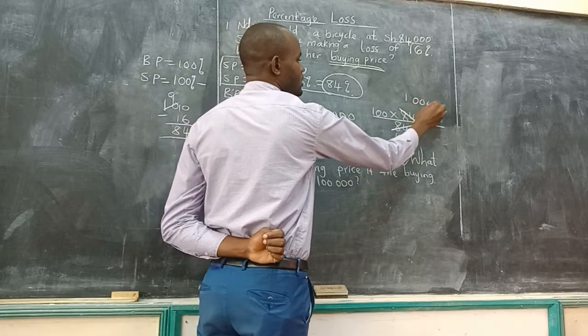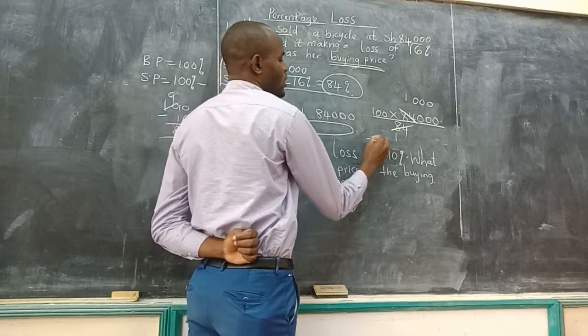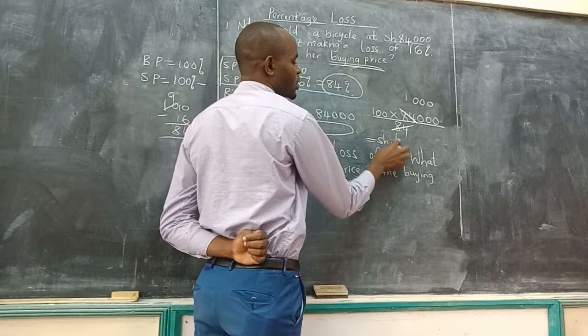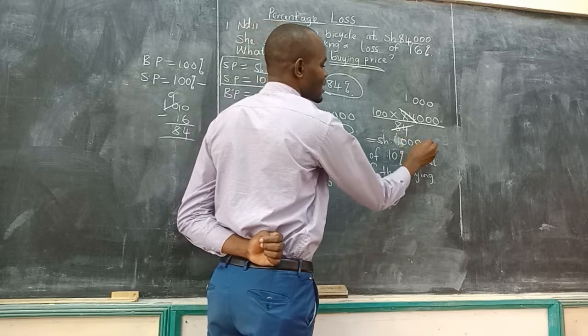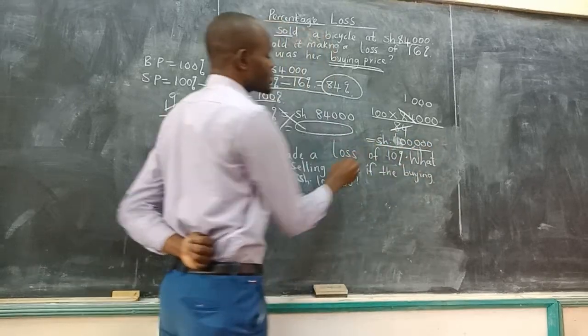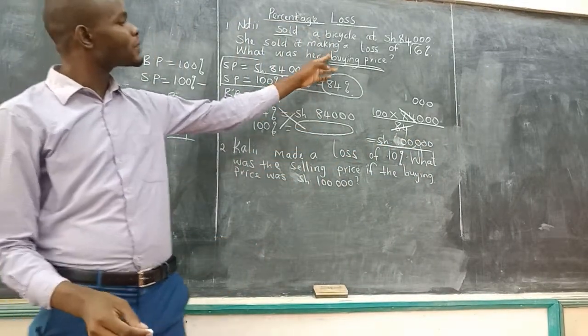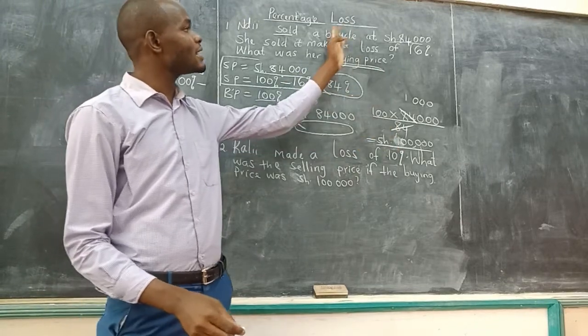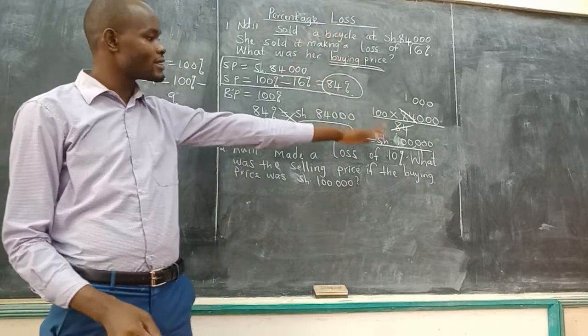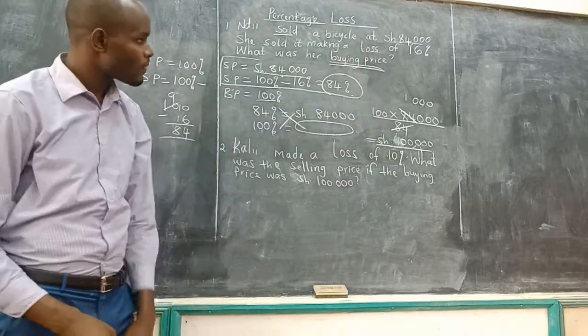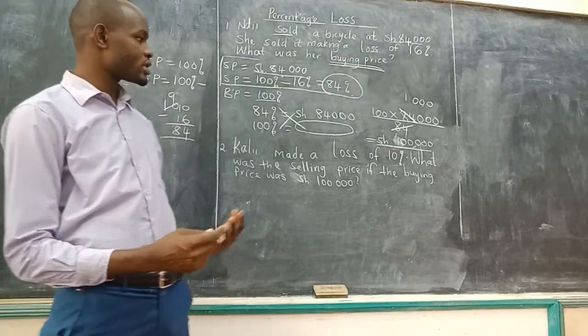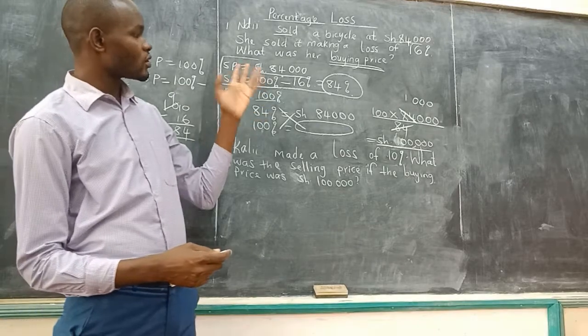We have 8 zeros. So 1,000 times 100 you get, this is money, shillings, we have 100,000 shillings. You can see the buying price is bigger than the selling price because you are talking about loss. This person spent a lot of money buying and sold less, so they never got any profit. They got loss.